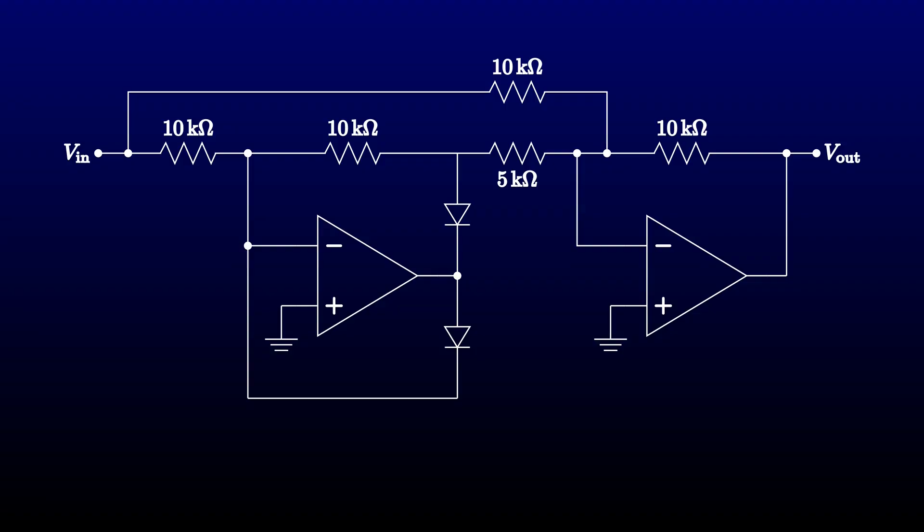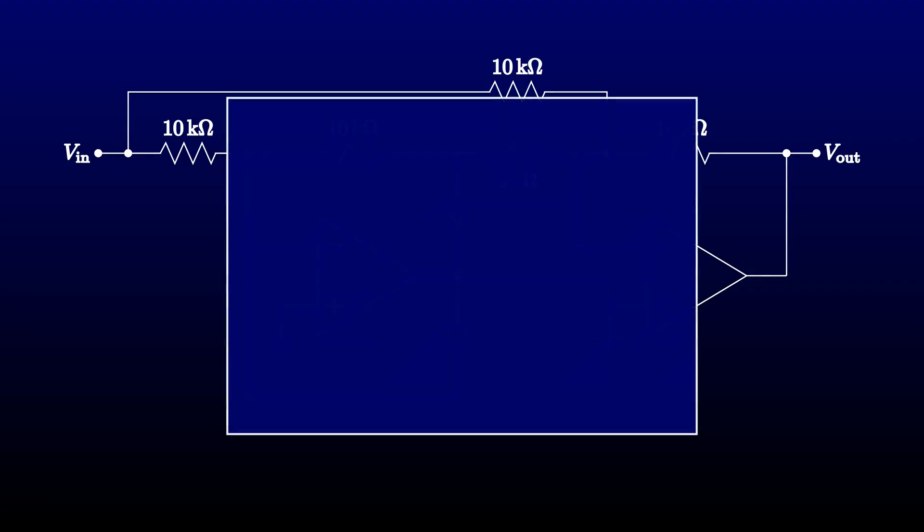Let's see what that gives us. The output voltage is the inverted input voltage plus twice the rectified input voltage. If we move the negative V sub in into the cases, we get that the output voltage is V sub in when V sub in is positive, and negative V sub in when V sub in is negative. But that's the definition of absolute value.